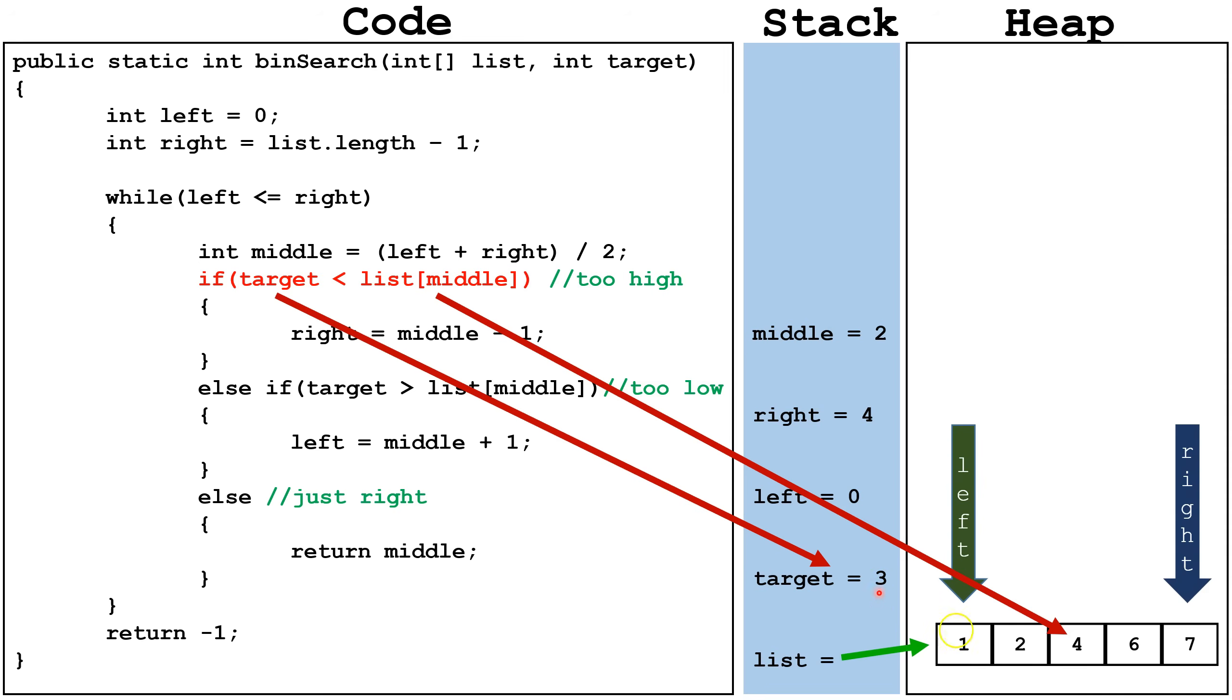So we're checking is the number 3 less than the number 4? That is true. So we're going to set right equal to middle minus 1. So now right equals 1, and this is our left and right arrow, so we're only going to be looking at the part of the array that's between, inclusive, the left and the right arrow.